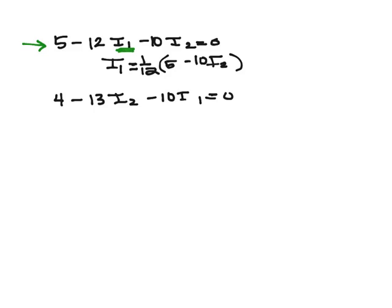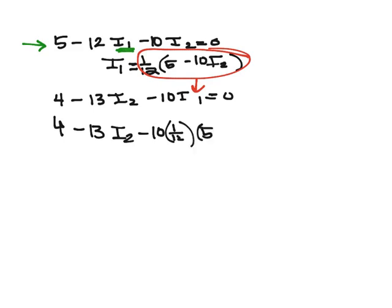Okay, and I'm going to take this expression and I'm going to put it into I1 down here. So now what I have is 4 minus 13 I2 minus 10 times 1 twelfth times 5 minus 10 I2 equals 0.